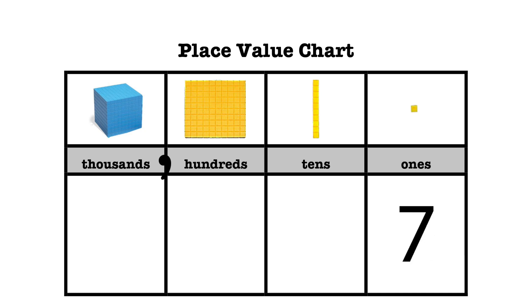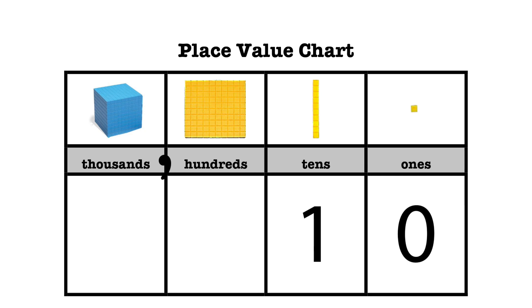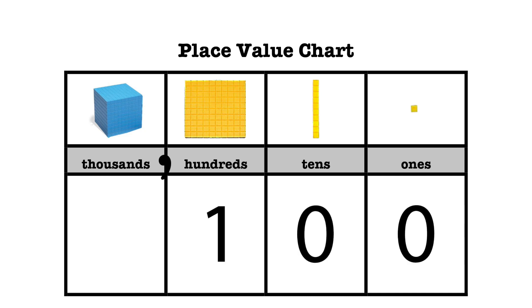Let's go back to basics. We all know about place values and how each number system has a certain number of digits that go into each place value until it rolls over to the next one. Let's start at the decimal system. In decimal, or base 10, there are 10 digits — 0 through 9 — that make up each place value. Once you get up to 9, the current place value rolls over to 0, and then you add 1 to the next place. 9 rolls over to 10, 19 rolls over to 20, 99 rolls over to 100, and so on.